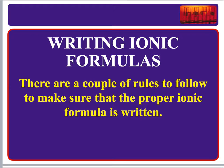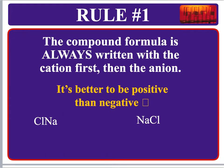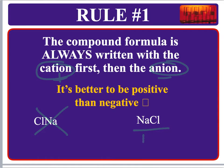Here are the rules for writing these formulas. First, we always write the cation first and then the anion. Remember, the cation has the positive charge and the anion has the negative charge. We always say something positive before something negative. So NaCl is written with sodium first because it has the positive charge and chloride has the negative charge.